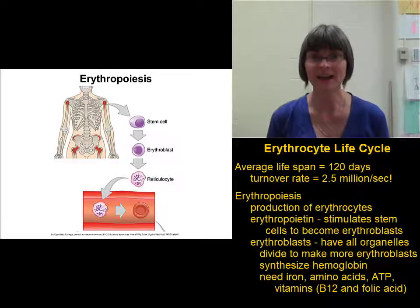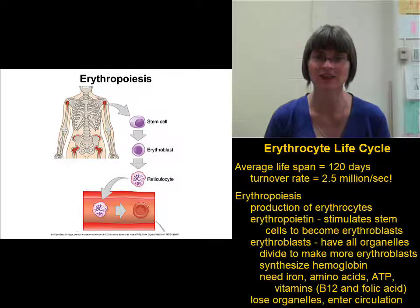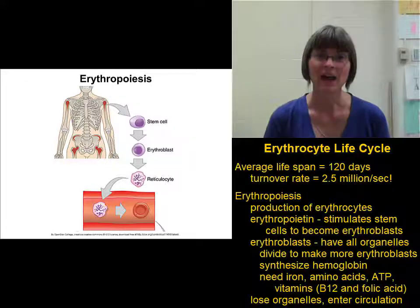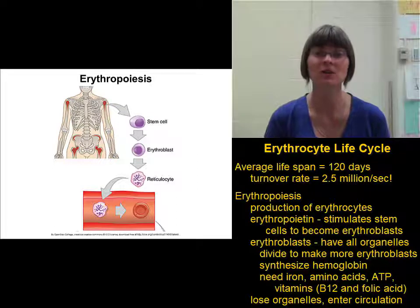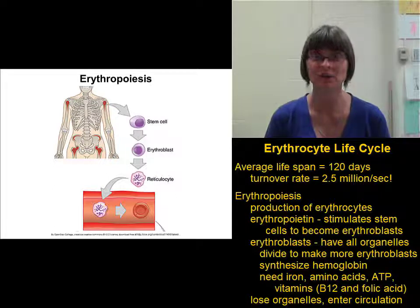Once the erythroblast has divided as much as it needs to and produced all of the hemoglobin it needs, it ejects all of the extra organelles — the nucleus, mitochondria, ribosomes — everything it won't need as a mature erythrocyte. At this point we have what's called a reticulocyte. The reticulocyte then leaves the bone marrow, enters the blood vessels, and finally matures into the fully functioning, biconcave disc-shaped, oxygen-carrying cell we call an erythrocyte.